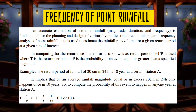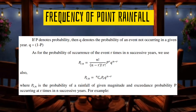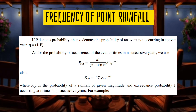Since T equals 1 over P, thus P equals 1 over T. P equals 1 over 10, so the probability is 0.1 or 10%. If P is the probability of an event occurring, then the opposite — the probability of an event not occurring in a given year — is denoted as Q, which is equal to 1 minus P.